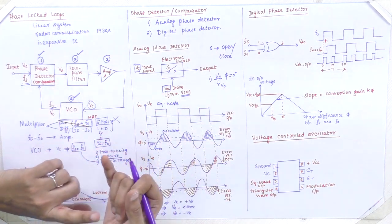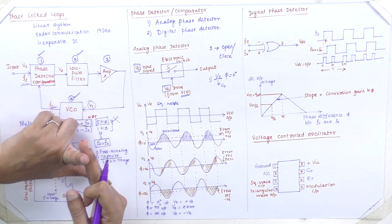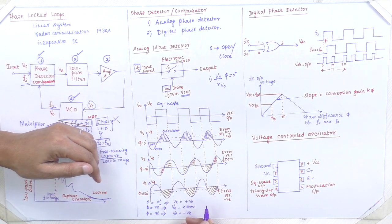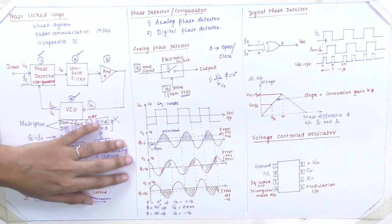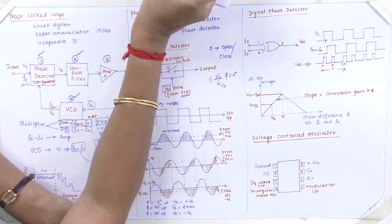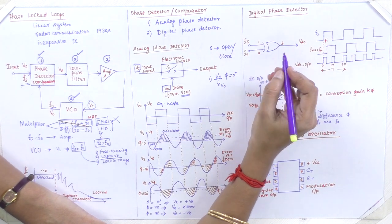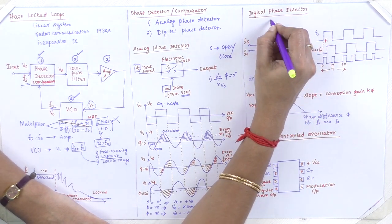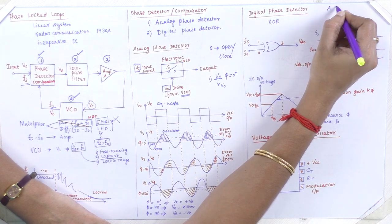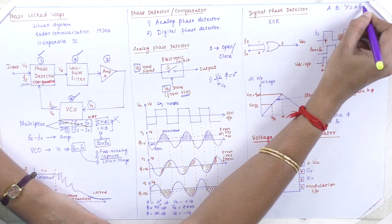In summary, for the analog phase detector: when phi equals 0 degrees, the error voltage is positive; when phi equals 90 degrees, the error voltage is 0; and when phi equals 180 degrees, the error voltage is negative. Coming to the digital phase detector — in this digital phase detector, we use basic gate operations. We use the XOR operation. The XOR gate expression is AB̄ + ĀB.